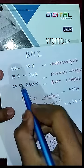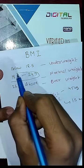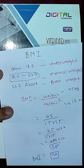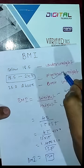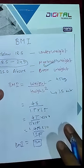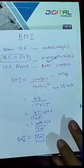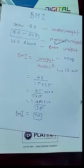A BMI of 20 falls within the range of 18.5 to 24.9, which is absolutely normal weight. So that is the criteria to find BMI. I hope you liked this video.